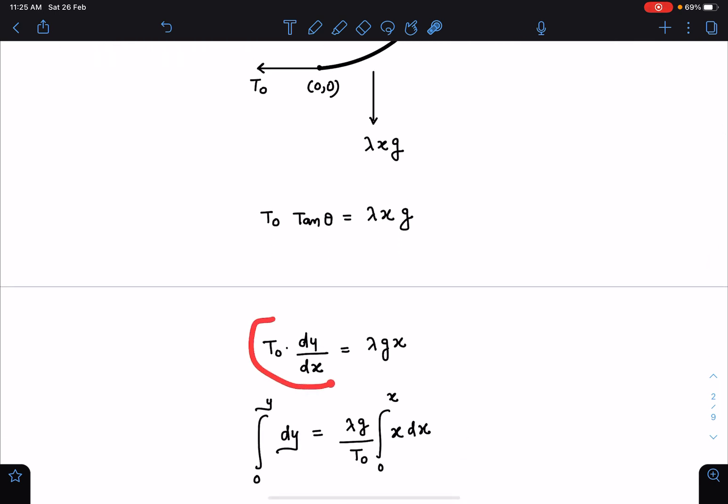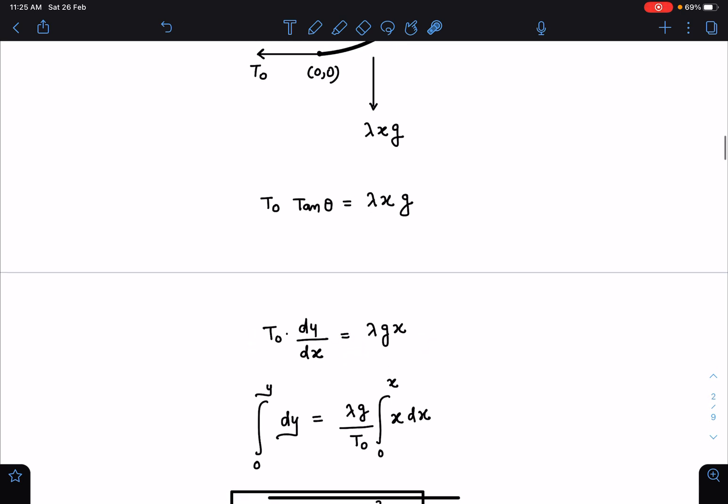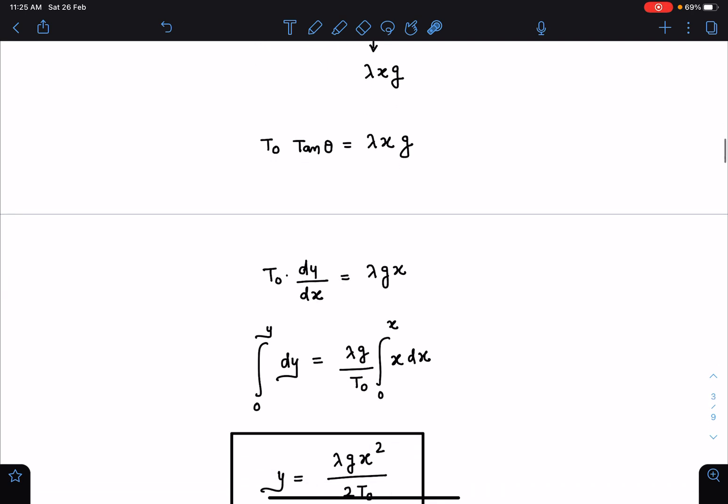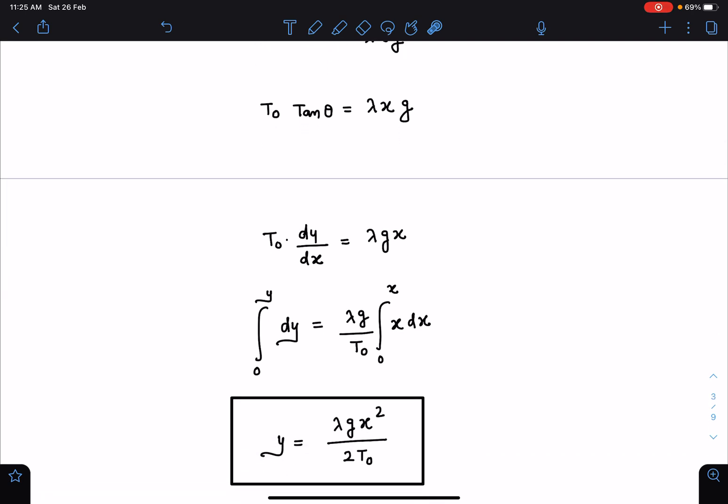So you can write T₀ (dy/dx) = λgx. Just separate the variables, and if you separate the variables here, the limit of y will go from 0 to y and 0 to general x. So when we simplify, we are getting y = λgx²/(2T₀).